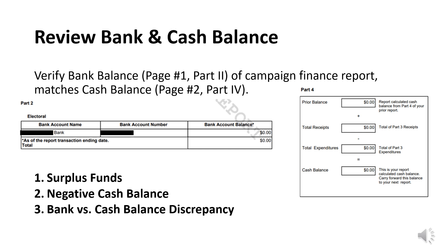One: if both bank and cash balances match and are a positive number greater than zero, this is known as surplus funds. Two: if both the bank and cash balances match and are a negative number less than zero, this is known as a negative cash balance. Three: if the bank and cash balances do not match, this is known as a bank versus cash balance discrepancy.